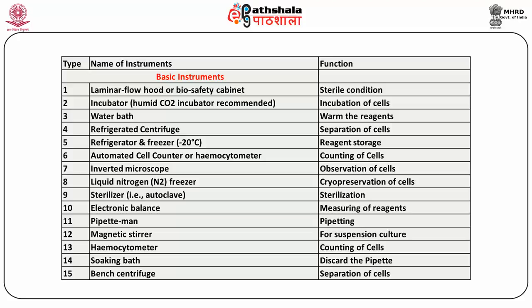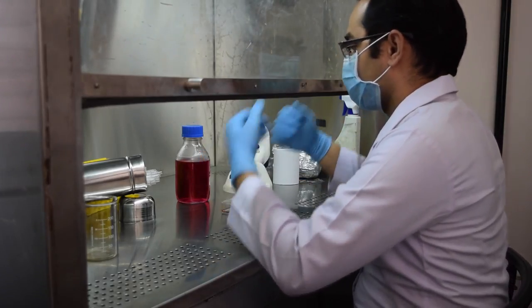Electronic balances are very helpful for weighing minute amounts of substances required in animal cell culture. A pipettor is also required for modern animal cell culture — mouth pipetting may lead to contamination or infection of laboratory staff. A magnetic stirrer is required for suspension culture, and a hemocytometer is required for counting cells and measuring growth patterns. A soaking bath is required to maintain proper maintenance of glass pipettes.